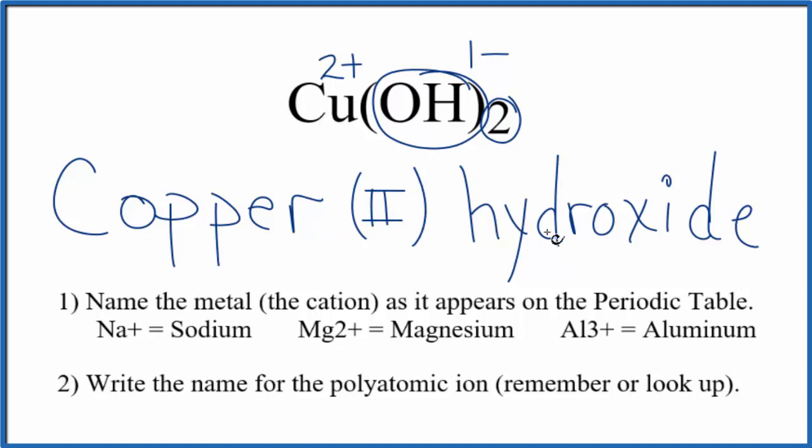If you're given the name copper (II) hydroxide and you want to write the formula, you know that copper is going to be 2 plus. And you know that hydroxide is always 1 minus, so you'll need two of those for the charge to balance out.